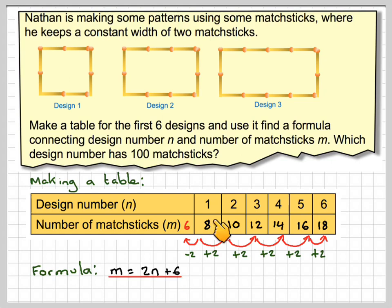We can check this. When n is 1, 2 times 1 is 2. 2 plus 6 gives me 8. When n is 2, 2 times 2 is 4. 4 plus 6 gives me 10. Let's jump to this one. 2 times 6 is 12. 12 plus 6 gives me 18.